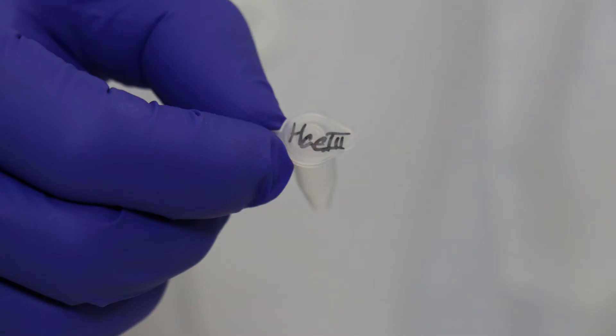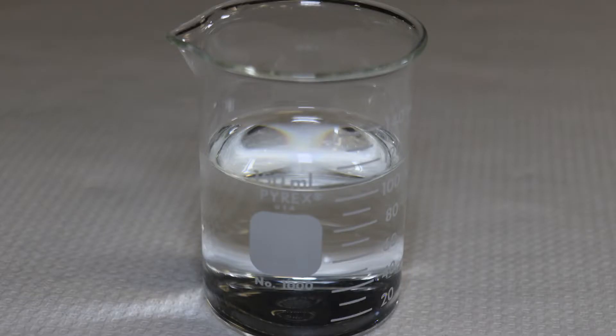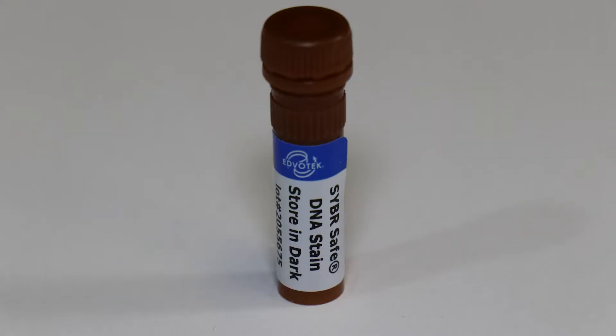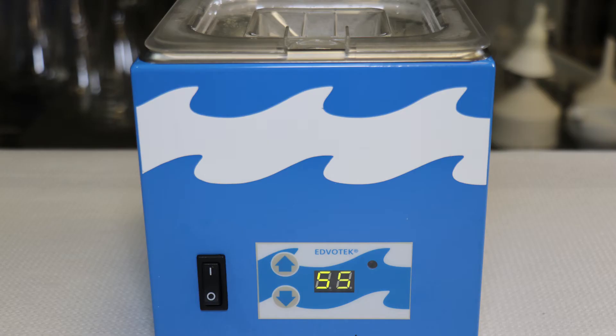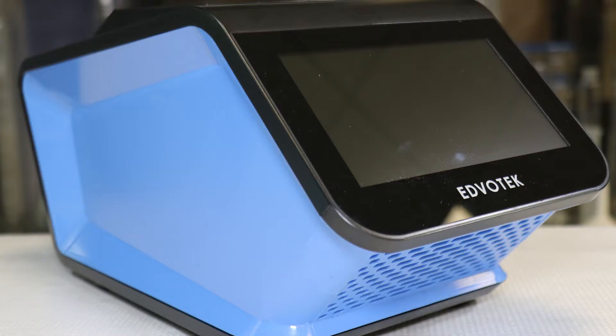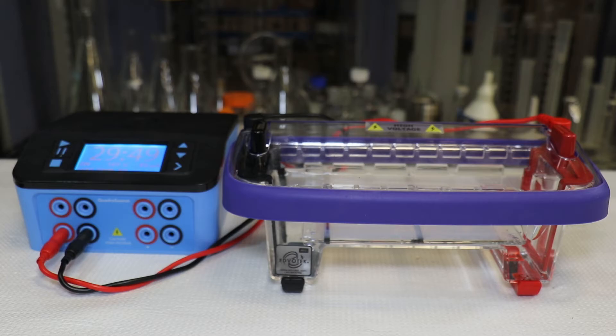One tube of Hae3 restriction enzyme, 1x TBE buffer solution, ultra spec agarose powder, cyber safe DNA stain, two water baths, one set at 55 degrees Celsius, the other at 99 degrees Celsius, a thermal cycler and electrophoresis apparatus with a power supply.